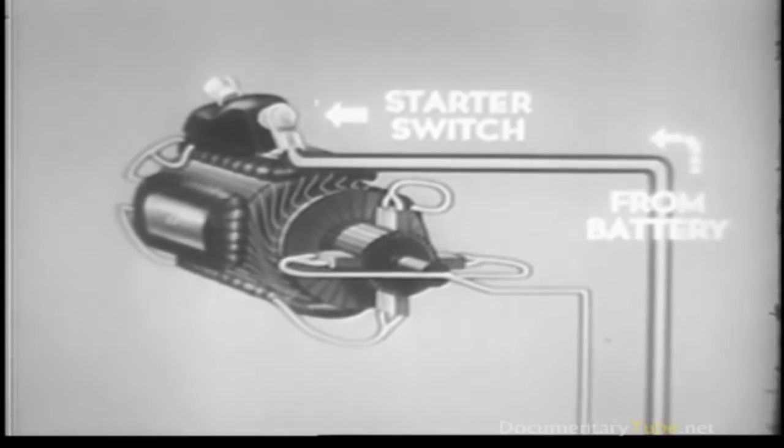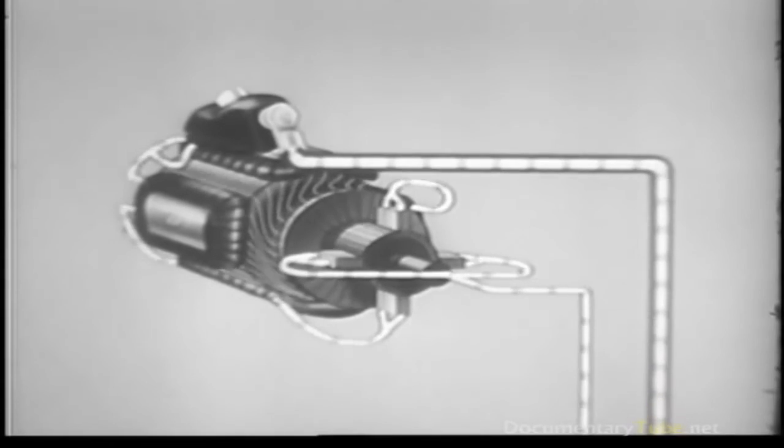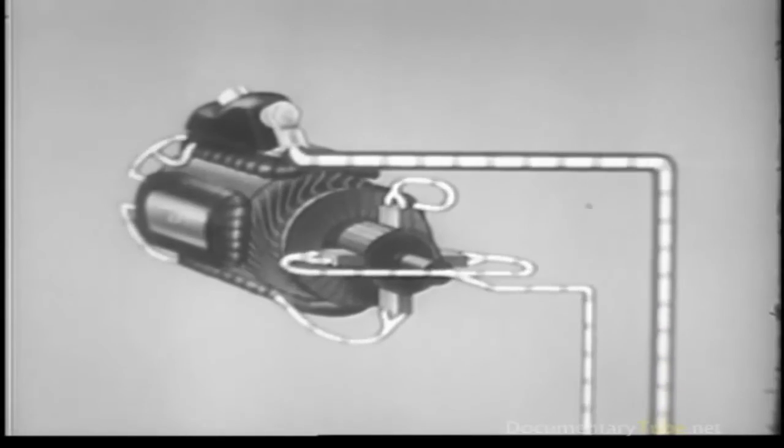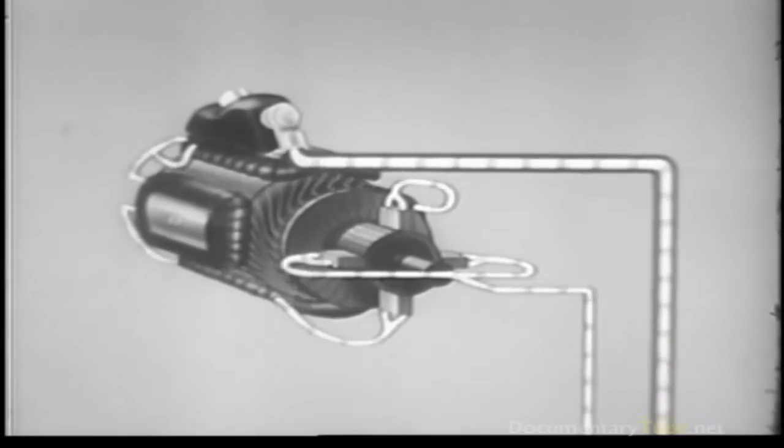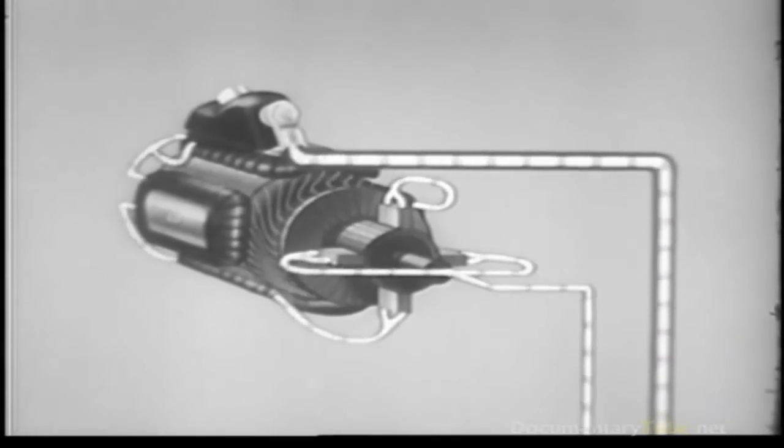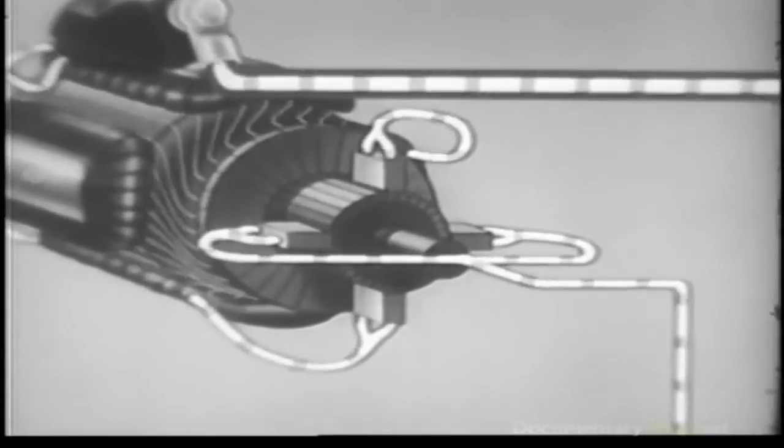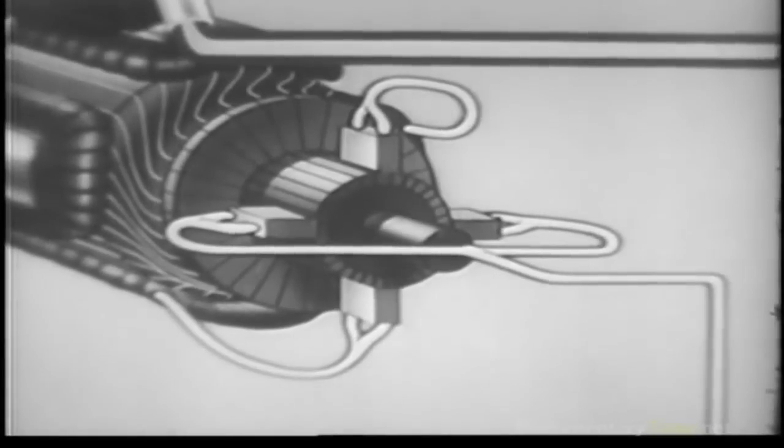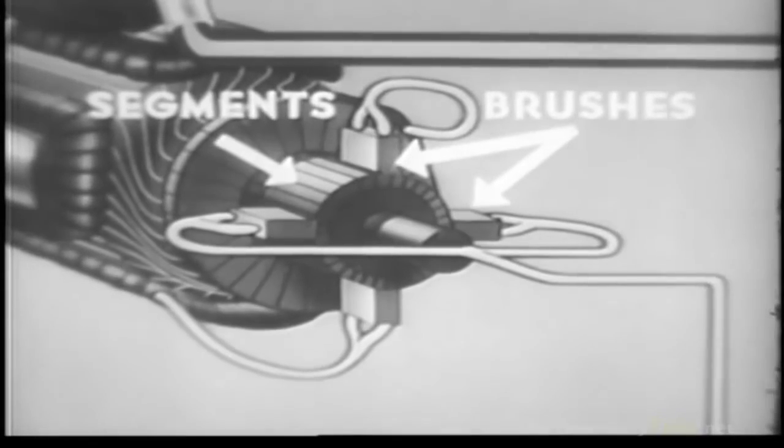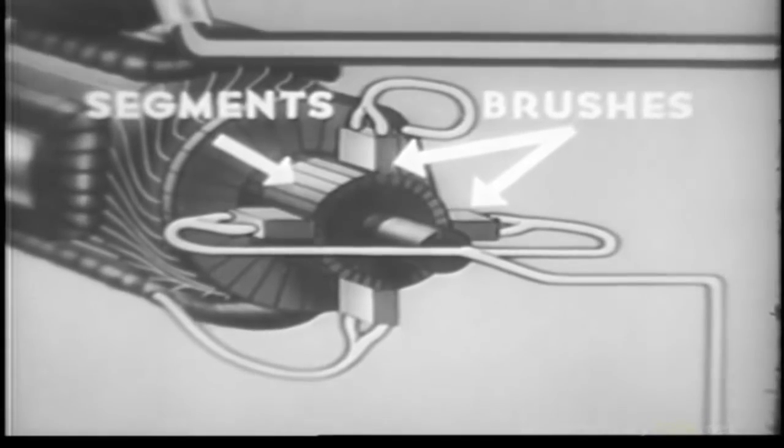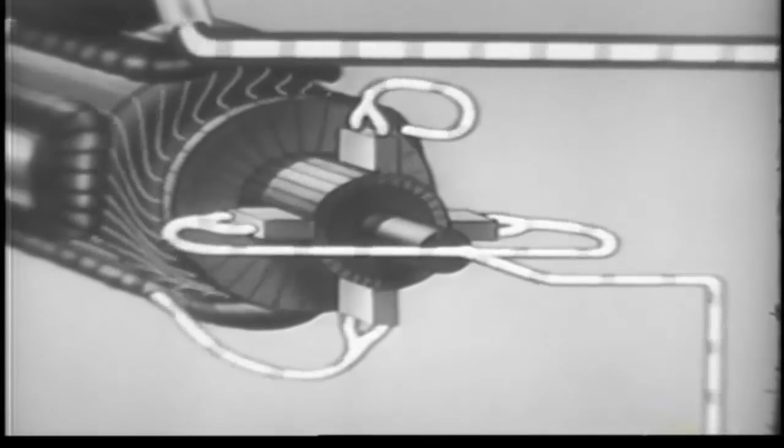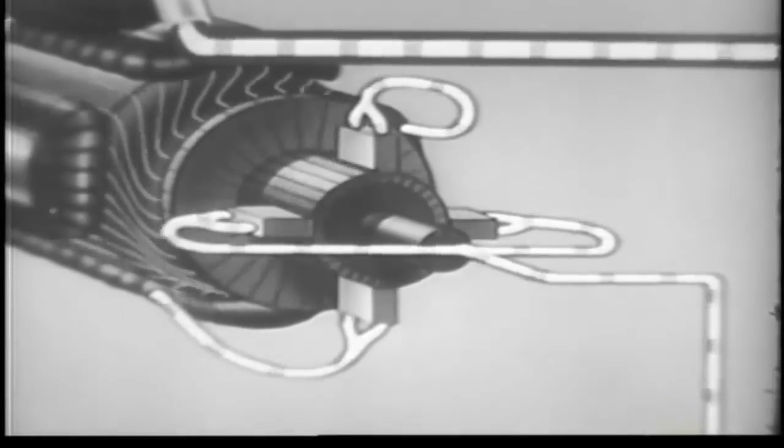The current from the battery gives polarity to the windings of the armature and field coils. This causes the armature to turn, in an attempt to line up its own poles with the field poles of opposite polarity. But they never succeed, because as the segments pass from one brush to the other, the current in the windings of the armature changes direction, with a consequent change of polarity.